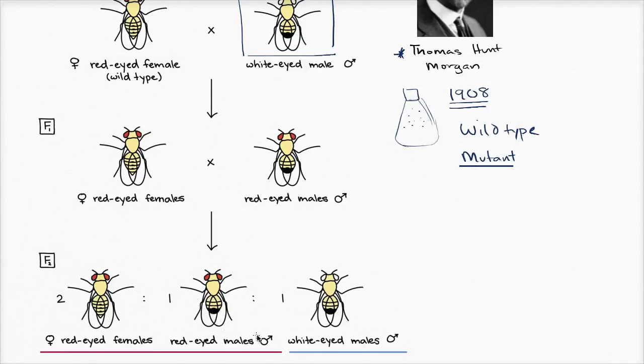But what was even more interesting was that he only observed the white eyes in the males in this F2 generation, in the second generation of the crosses. And so you're thinking, well, why is that a big deal? Well, he was a pretty astute guy and he says, if I'm only seeing it in the males, and it's not like he only got four offspring here, it was in the ratio. He might have had hundreds of them, but it was in the ratio of two red-eyed females for every one red-eyed male, for every one white-eyed male. Across these hundreds in this generation, he only observed the white eyes on the males. He said, maybe this is in some way related to the chromosome that determines sex.